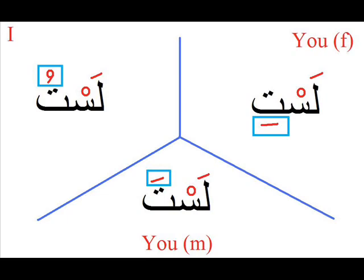And for Anti, the female form, we say Lastu. You can notice Lastu for I and Lastu for Anti — the difference is in the vocalization of the final letter, as shown on screen in the blue rectangle. For Anna I say Lastu, and for Anti I say Lastu — it's the same final letter but with a different vocalization.